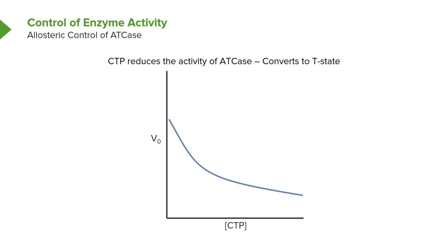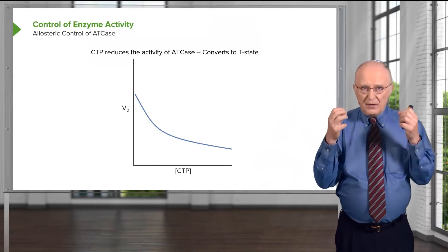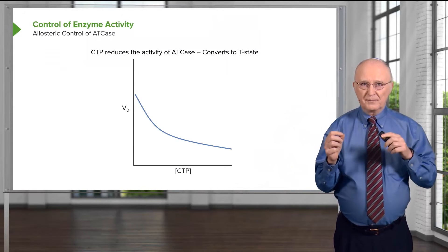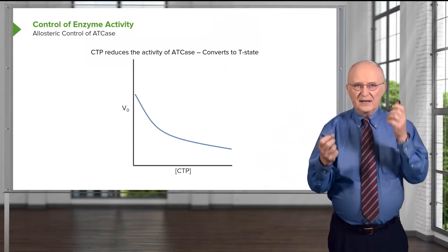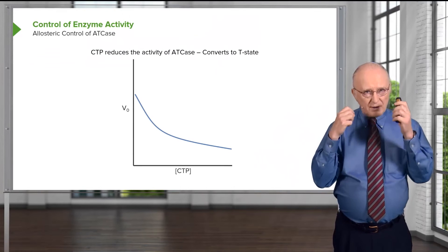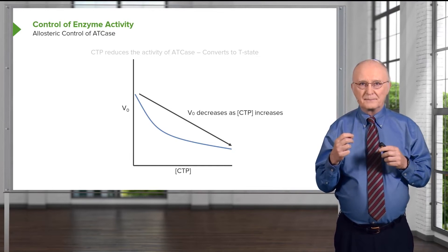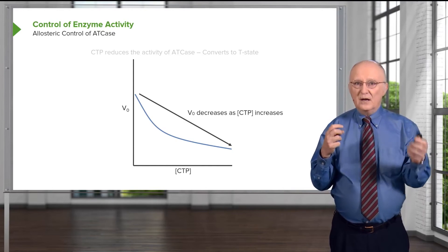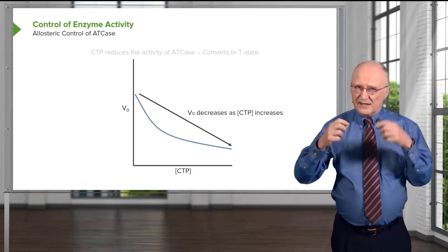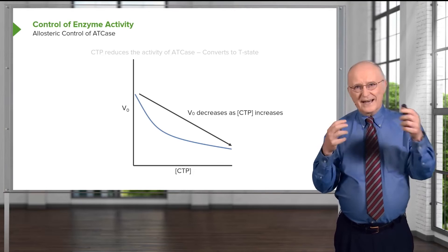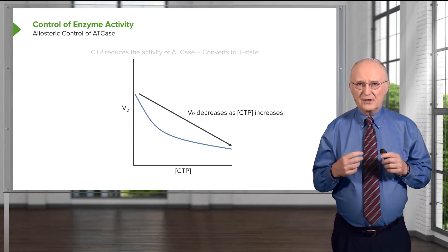This is important because the cell doesn't want to be churning out too much CTP. If it makes too much, it's wasting energy. Another reason cells don't want to make too much of a nucleotide: if the nucleotides get out of balance, the cell is much more prone to having mutations. So balancing nucleotides and having these controls are important not just for energy purposes, but also for maintaining the integrity of the DNA. The most important point is that velocity decreases as the concentration of CTP increases.